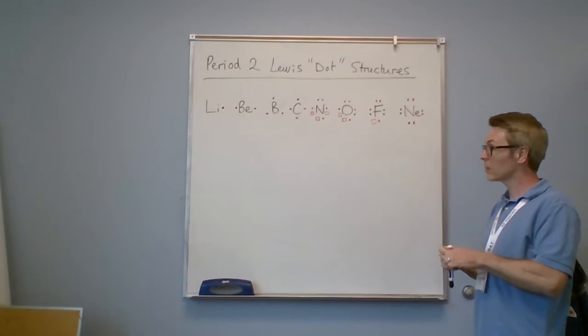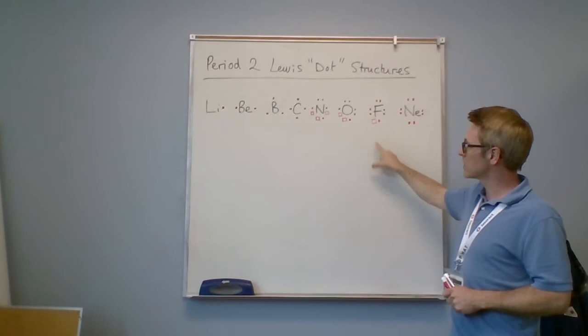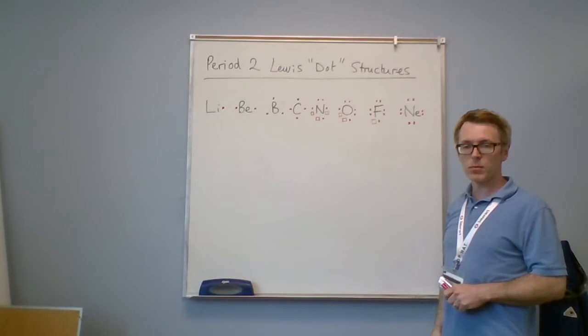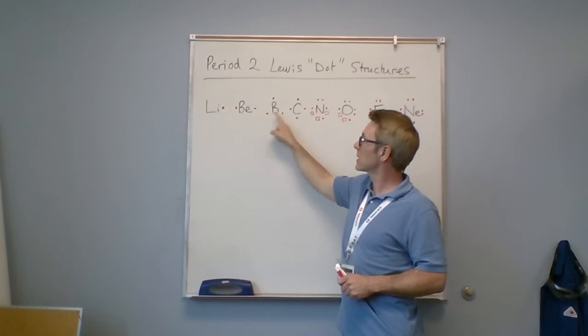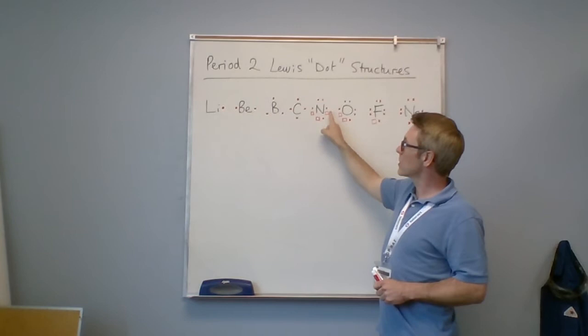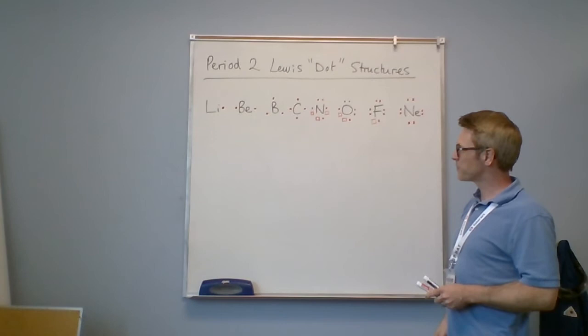To repeat, these are Period 2 Lewis dot structures. Anything in Group 18 is going to be the same as this. By looking at one period, we can gain access to all the periods because they all follow a similar pattern. Going from left to right, we have one valence electron, two valence electrons, three valence electrons, four valence electrons, five valence electrons with three boxes, six valence electrons with two boxes, seven valence electrons with one box, eight valence electrons with no boxes.